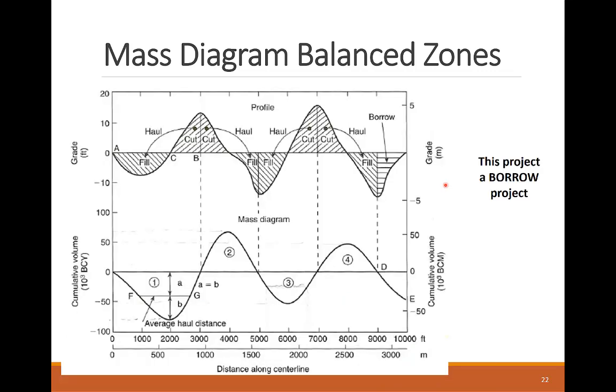This is another example with four balanced CTF zones, but we see now a case of a borrow project. We can know that by seeing a fill segment that is not part of any balanced zone and the negative mass ordinate at the ending station of the project. For a borrow project, the contractor will have to buy dirt and haul it to the site for this unbalanced fill segment of the project.